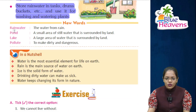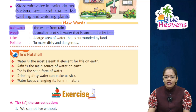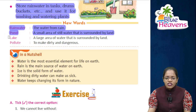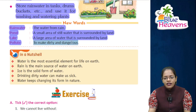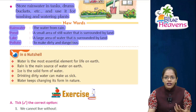Now let's see new words. Rain water means the water from rain. Pond means a small area of still water surrounded by land. Lake means jheel — a large area of water surrounded by land. Pollute means to make dirty and dangerous.